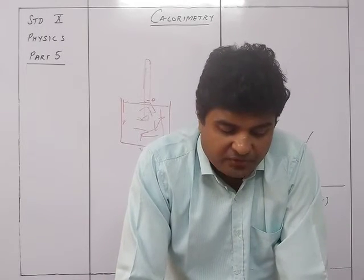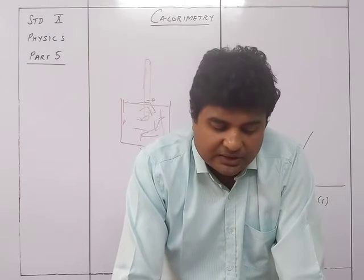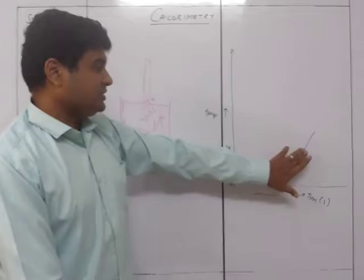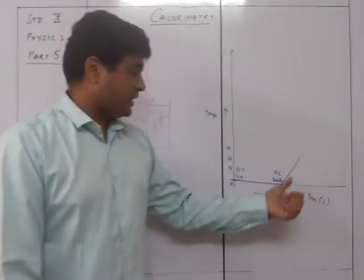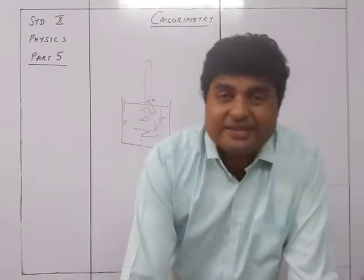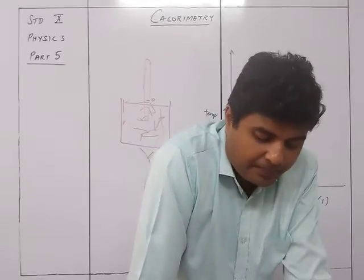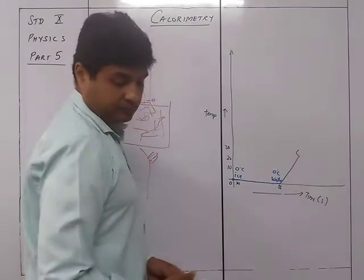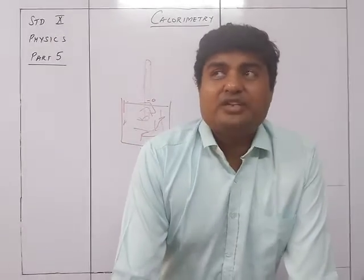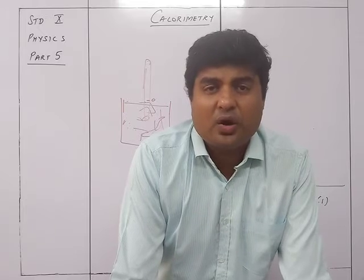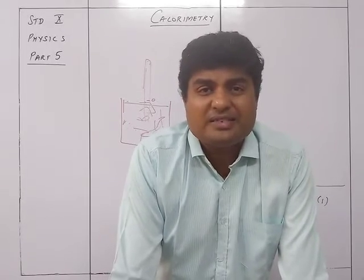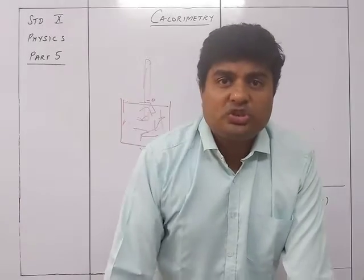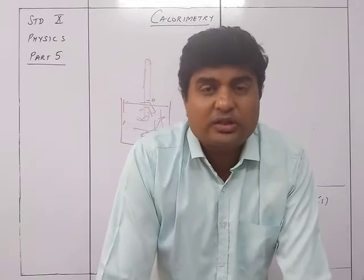Plot a graph of temperature against time with temperature on the y-axis and time on the x-axis. The graph obtained is called the heating curve of ice, going up to 30 degrees Celsius. From the graph, the temperature of ice remains constant at zero degrees Celsius in part AB — from point A to point B — until the whole ice melts.